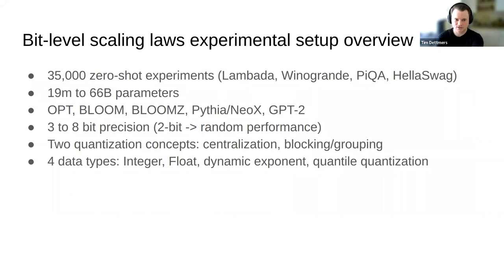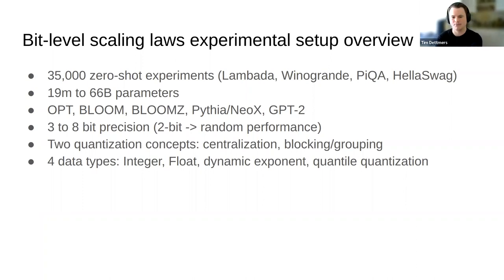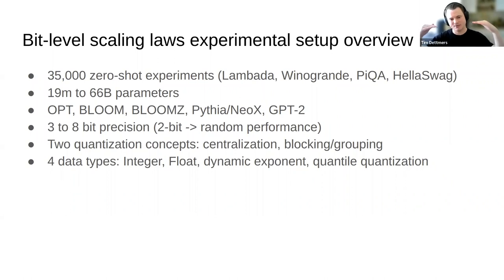Almost all latency in inference comes from loading the weight matrix. So if you compress the weight matrix by a factor of two, you get a speed-up of two. The natural question becomes: if you have two models with the same number of bits, which is better — higher precision with fewer parameters, or more parameters at lower precision? This is what I study in this paper. We do 35,000 zero-shot experiments across models from 19 million to 175 billion parameters, including OPT, Bloom, Pythia, Neoaxe, and GPT-2, from 3-bit to 8-bit precision.